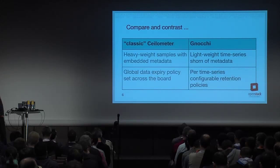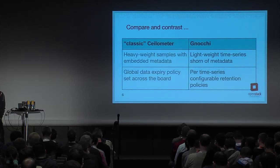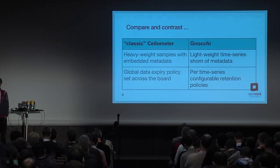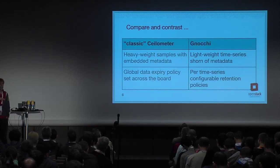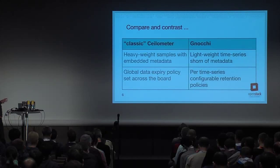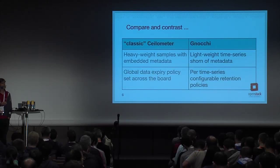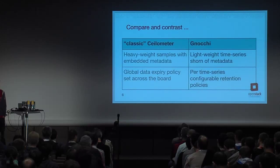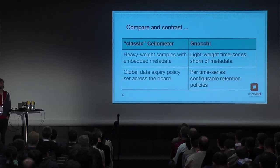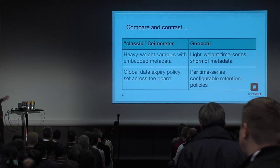Another point is: how long are you really interested in keeping data around? For CPU utilization, its currency is key. Fresh data from the last hour or day is actionable — you can drive alarming and auto-scaling from it. But data from last week? Last month? Last year? It becomes much less useful. However, for data used to drive billing, like the existence of instances, you probably want to keep it around much longer. The problem with Ceilometer is that our initial approach to expiry was completely global — data exists at full resolution until it falls off a cliff and no longer exists, not selective based on what type of data it is.